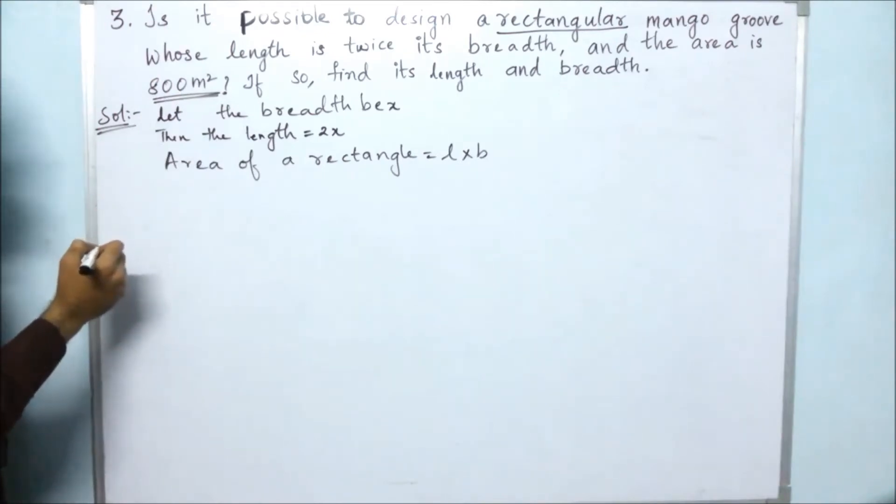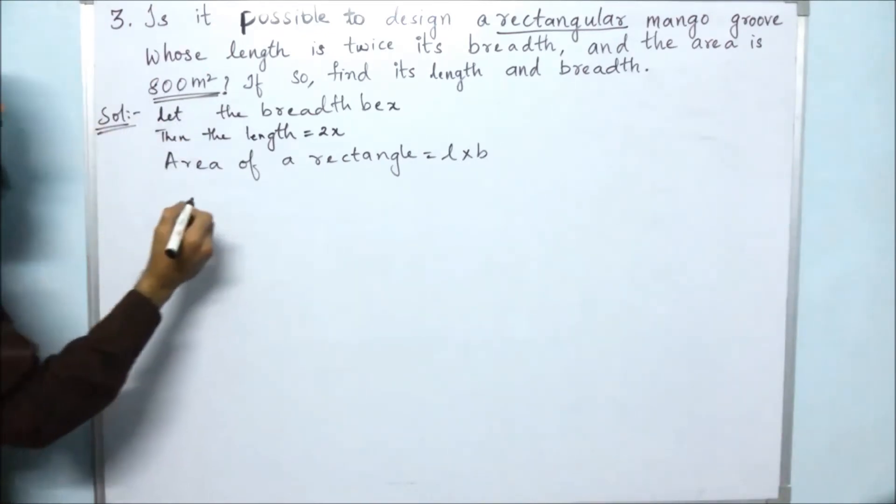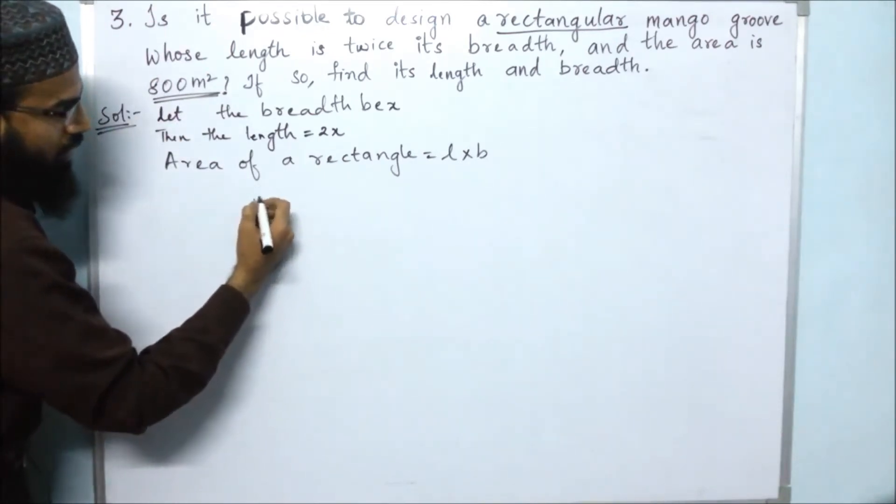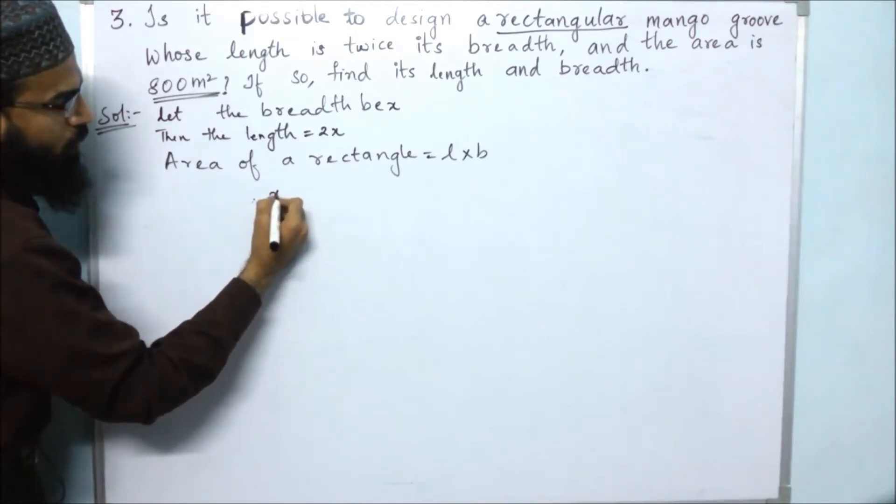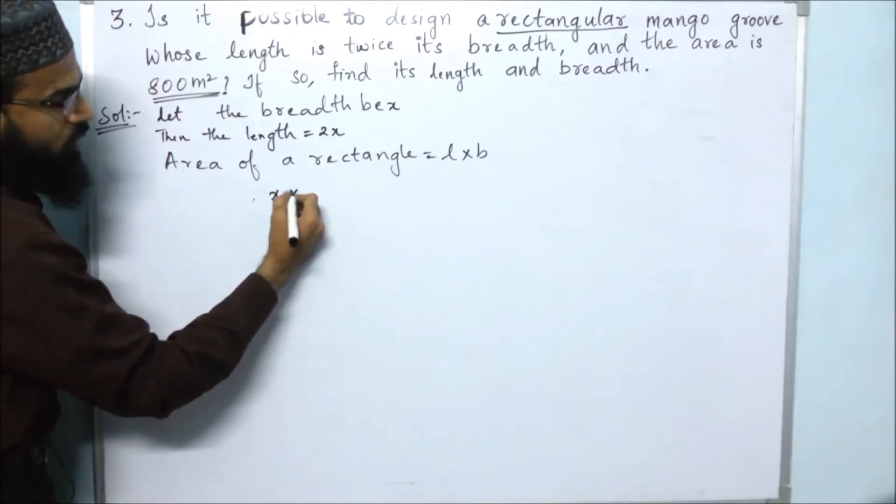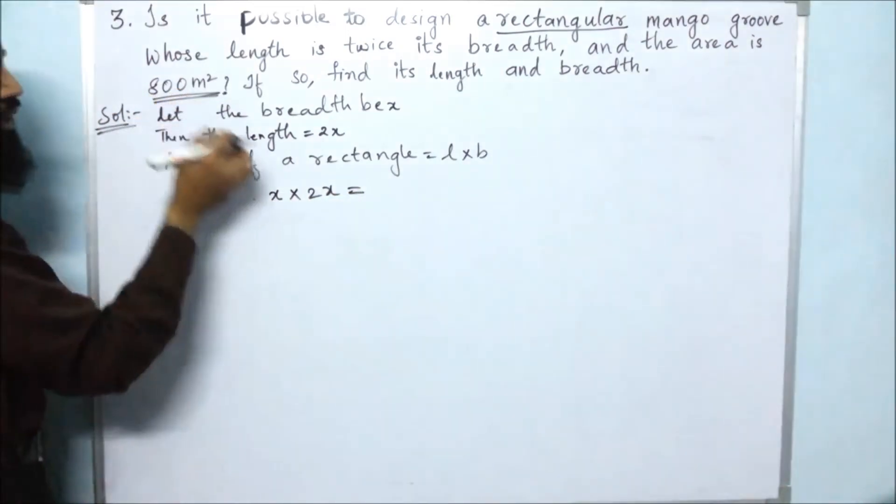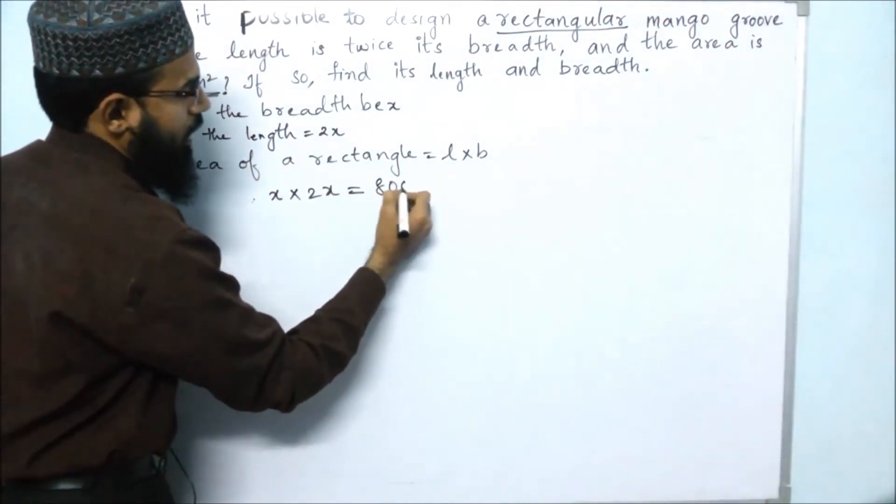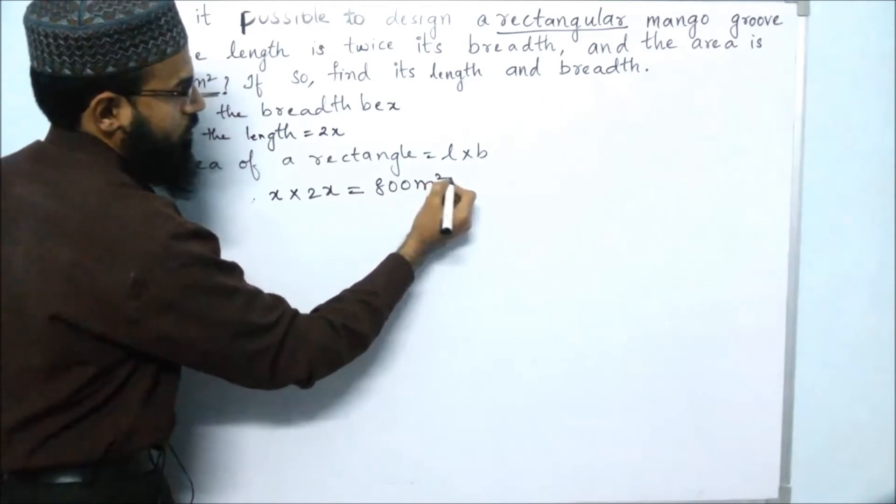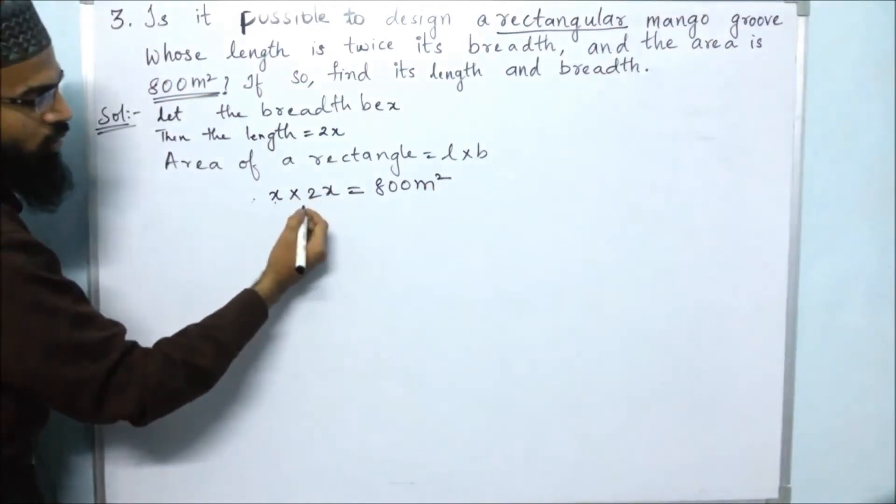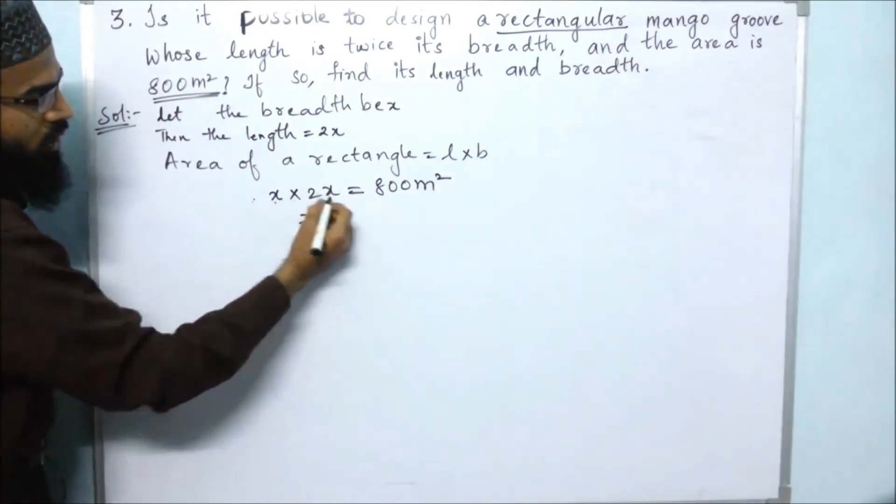We can write length into breadth: x into 2x equals the given area 800. So x into 2x, that is 2x², equals 800.